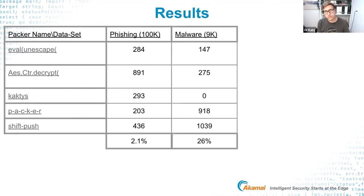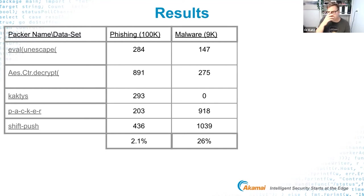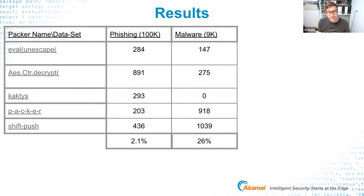The second data set was a malware-associated data set with around 9,000 samples, which was much better quality. In that case, we were able to see that 26% of the data set was using JavaScript obfuscation techniques. The lesson learned: we're seeing a lot of malicious JavaScript files being obfuscated in the wild, meaning this technique is widely used by threat actors to create more elusive files — security by obscurity.